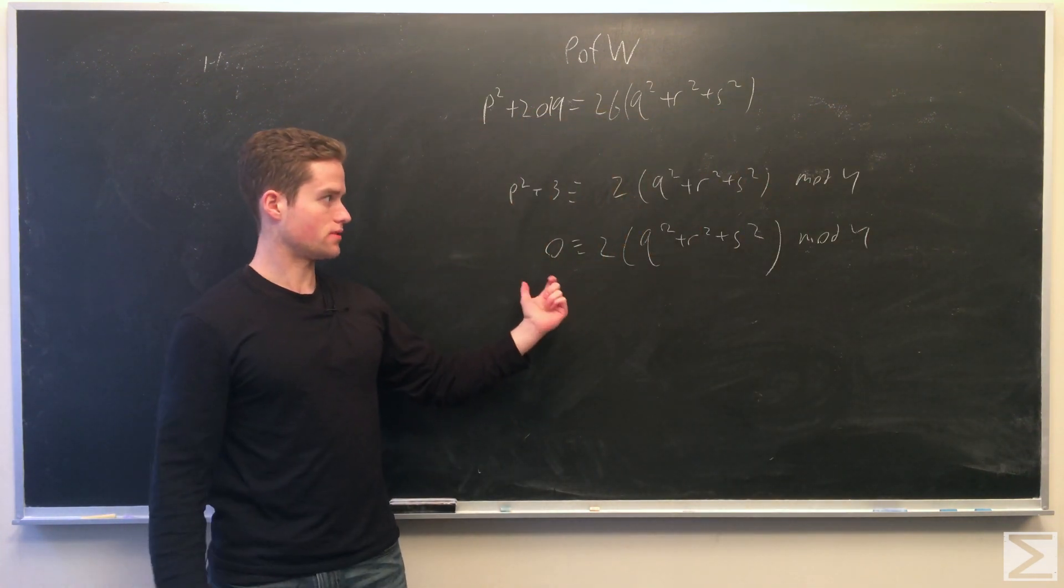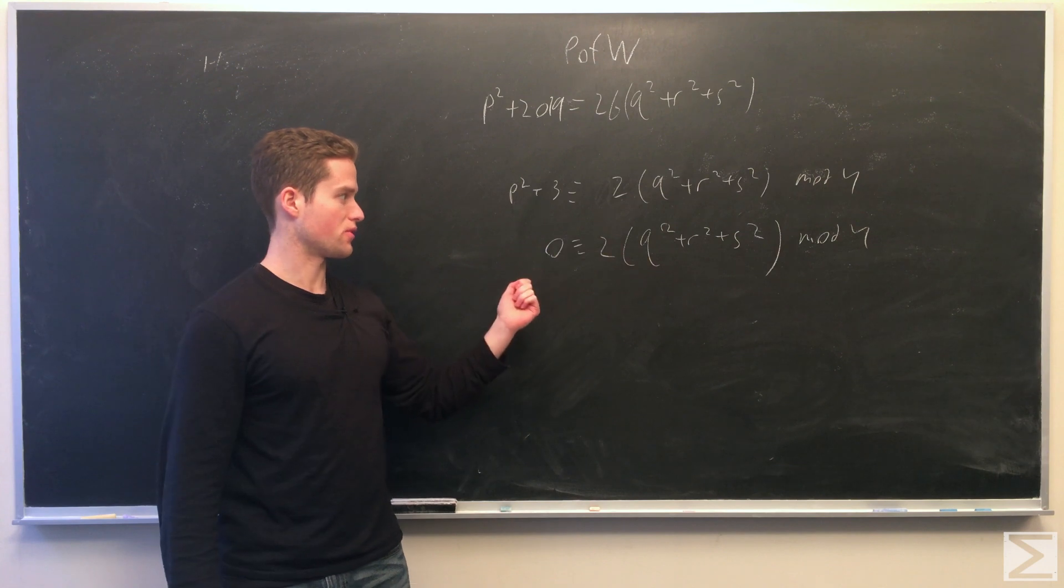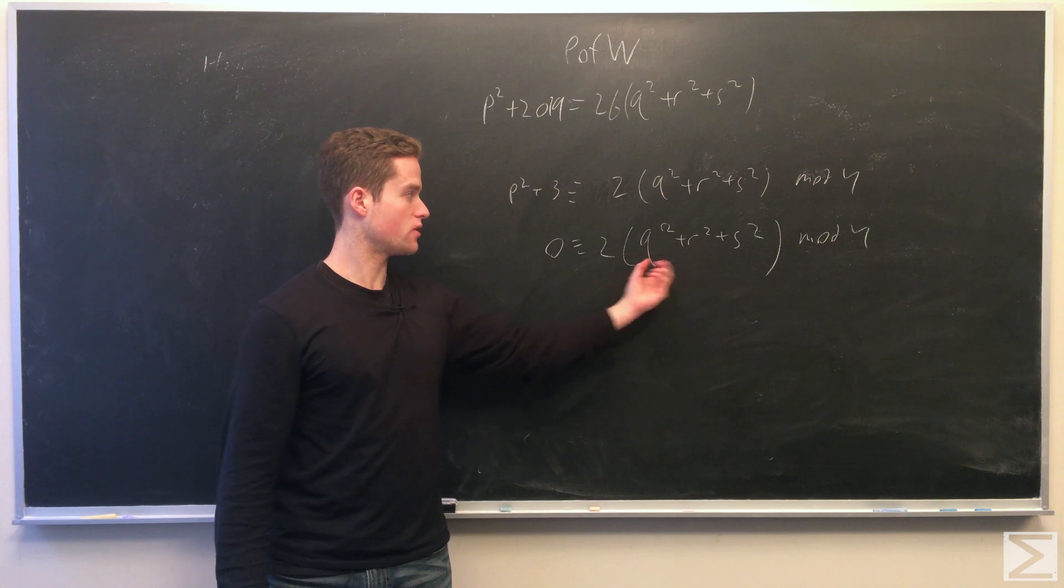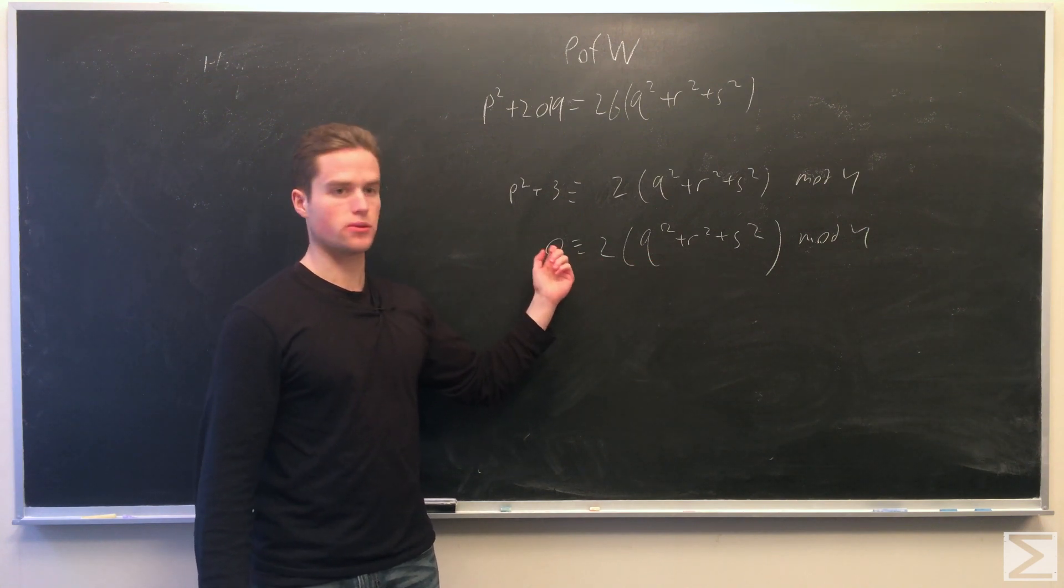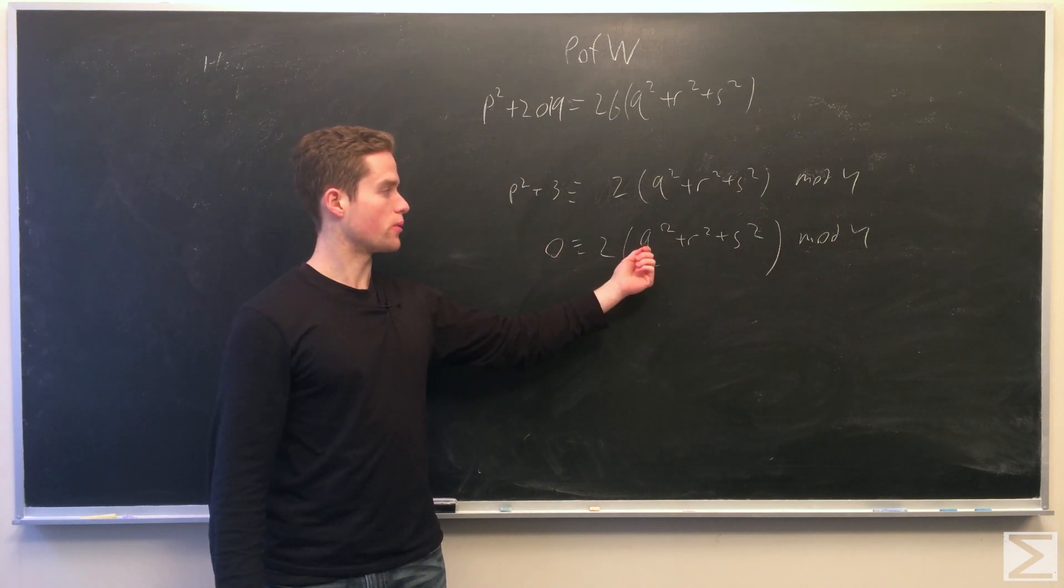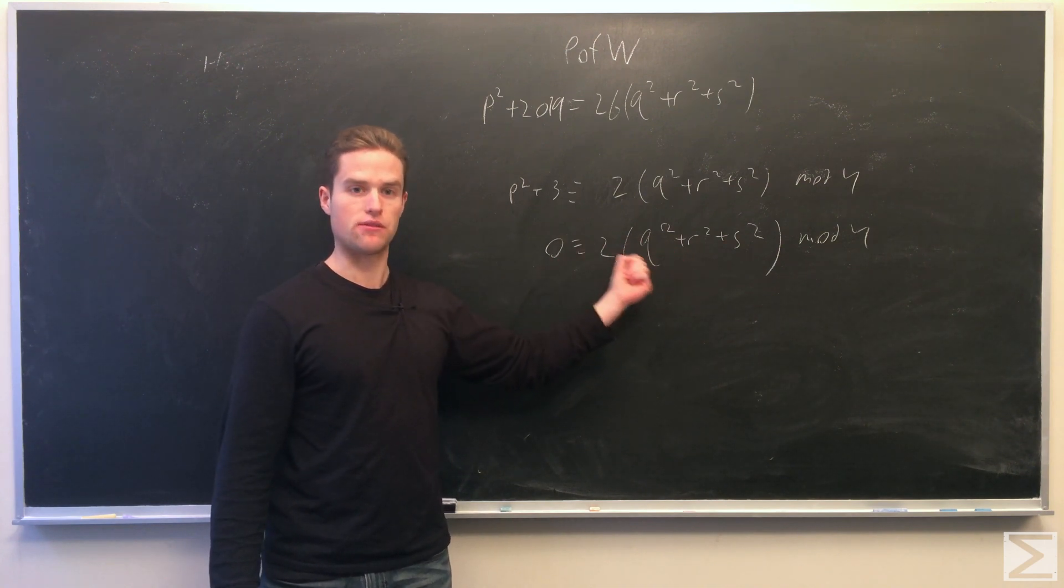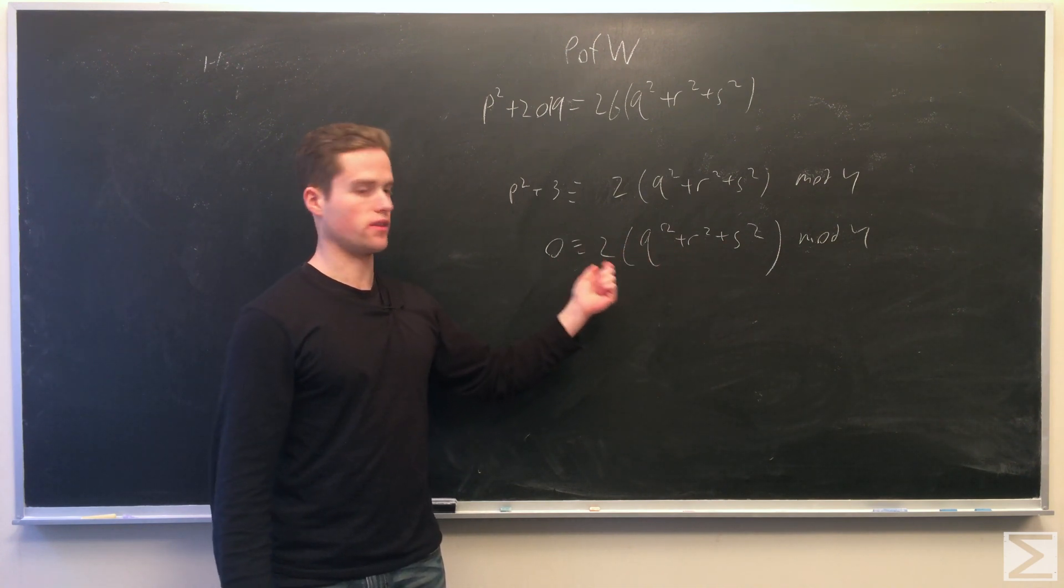Now one more observation of this modulo equation. If q, r, and s are all odd, this thing inside would be odd. We have two congruent to zero which is a contradiction. So we must have at least one of these even, but the only even prime is 2. So one of these is 2.